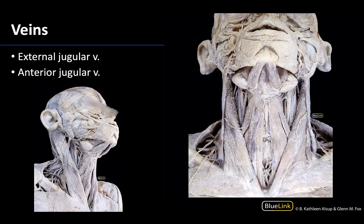Let's start with the superficial vein that is typically the most obvious and constant. It's located in the anterior lateral neck — these are your external jugular veins. You know you're looking superficially because here is your sternocleidomastoid muscle. It's going to begin around the angle of the mandible and is formed by the junction of the posterior division of the retromandibular vein and the posterior auricular vein. It will run superficial to and obliquely across the sternocleidomastoid, and typically drains into the subclavian vein, lateral and deep to the sternocleidomastoid muscle.